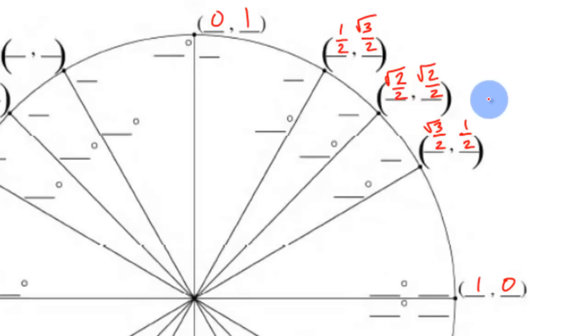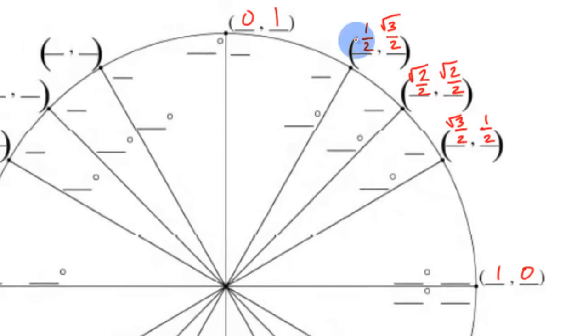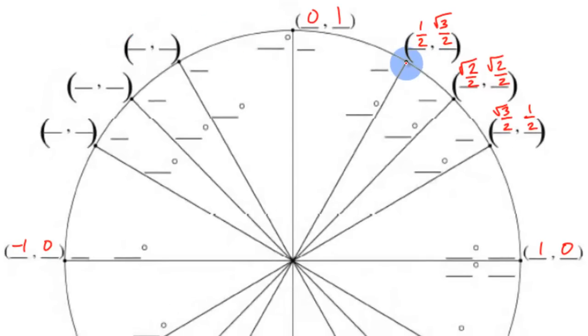And now we can go ahead and fill those around the whole unit circle. So basically over here, just the x value becomes negative. This point is here, over to the right that many, so it's over to the left. It just mirrors straight across: -1/2, √3/2; -√2/2, √2/2; -√3/2, 1/2.